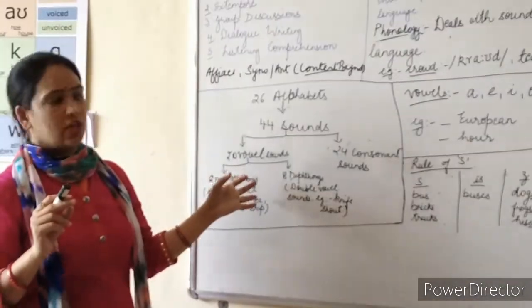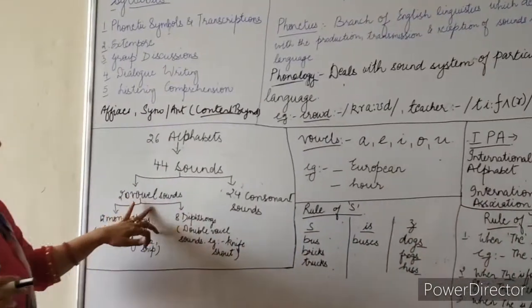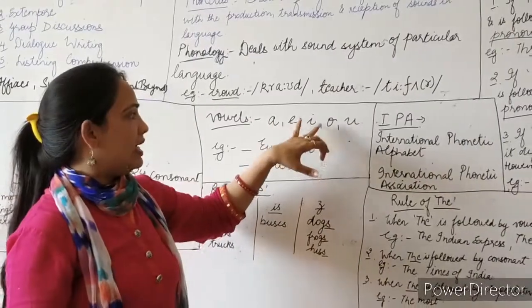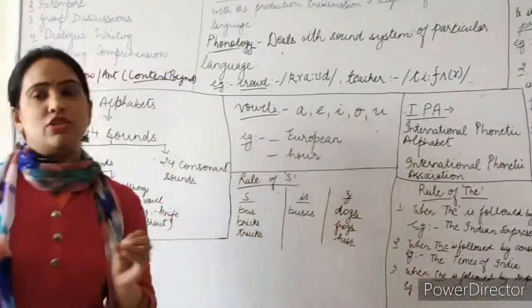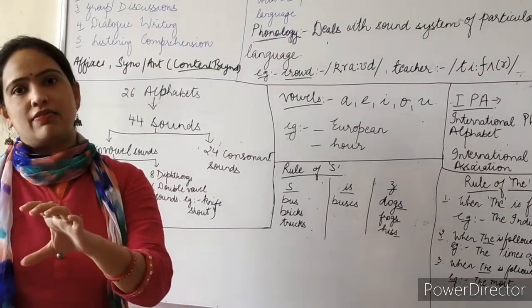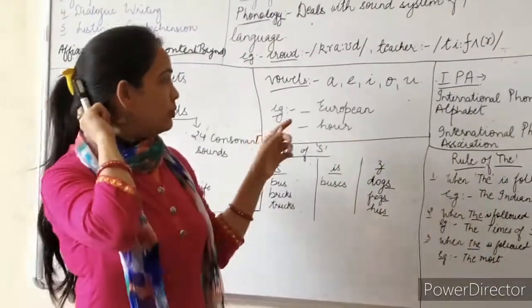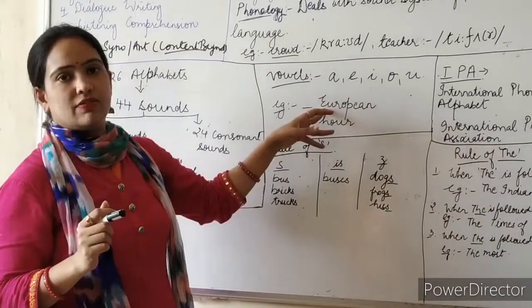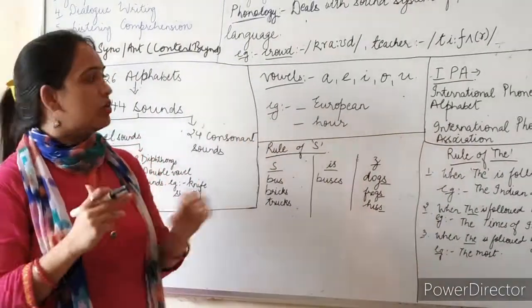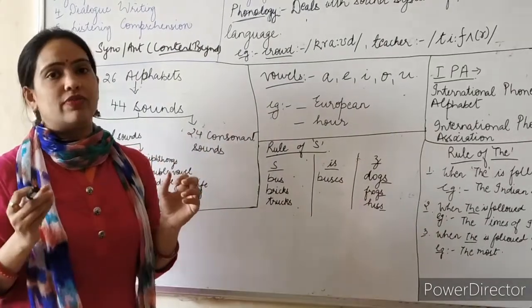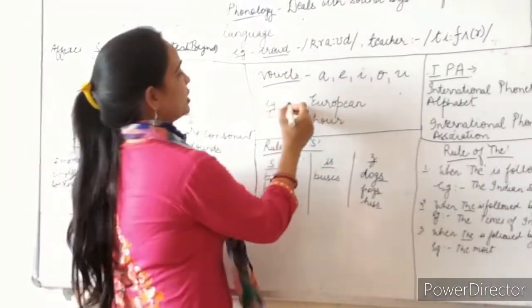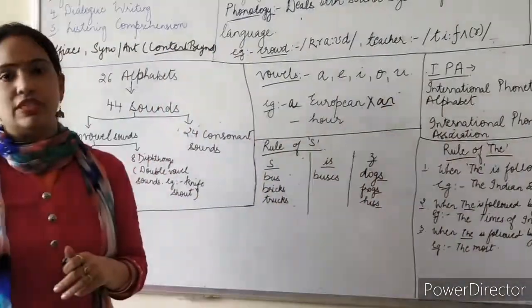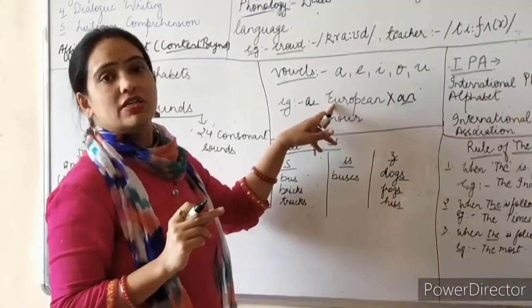When talking about vowel sounds, in English we have 5 vowels: A, E, I, O, and U. Many times your teacher may have taught you that if there is a vowel, you need to put 'a' or 'an'. However, take the word 'European' — it begins with the vowel letter 'E', but the sound coming is 'y', which is a consonant sound. So we say 'a European', not 'an European'.